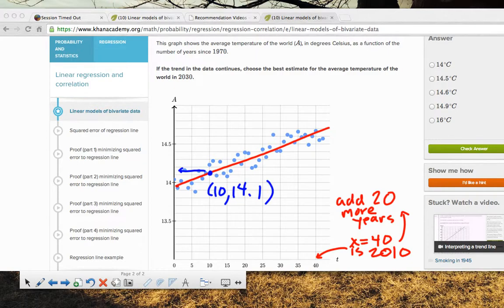And then I'll find, it doesn't matter what other point, I just need a second point. This one looks like it's pretty clear. Notice that I'm picking clear x's. So that is 40, and then I have a y value of 14.65.